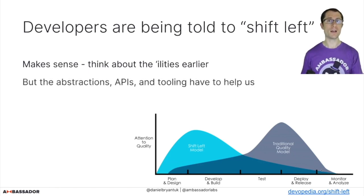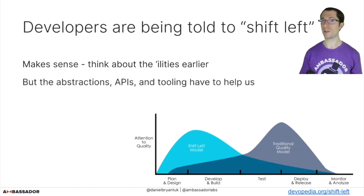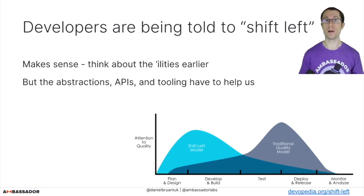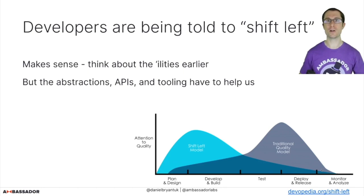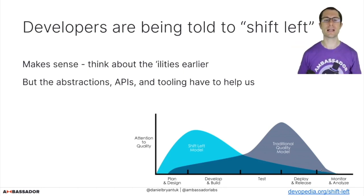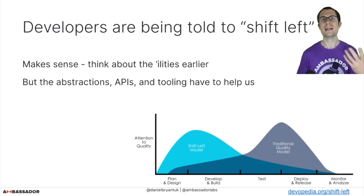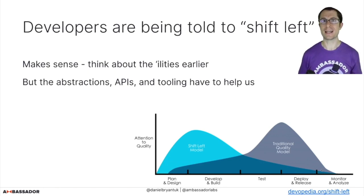The challenge back then was there weren't great abstractions, great APIs, or great tooling to help us. This led to fragmentation — Dev doing just their thing, Ops doing just their thing, InfoSec doing just their thing — resulting in a lot of handoffs and muddles. All the challenges you've heard about in books like Accelerate and the DevOps Handbook were real back in the day.